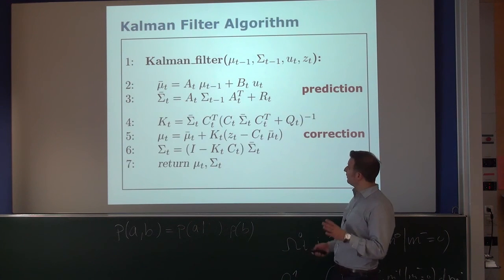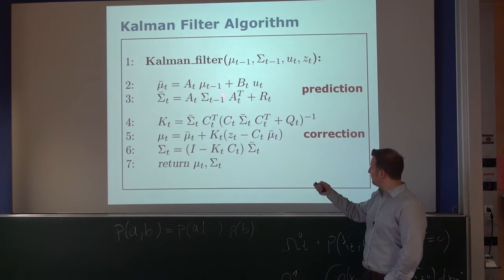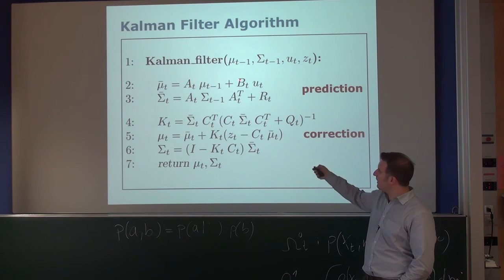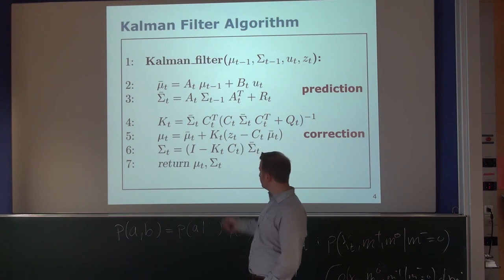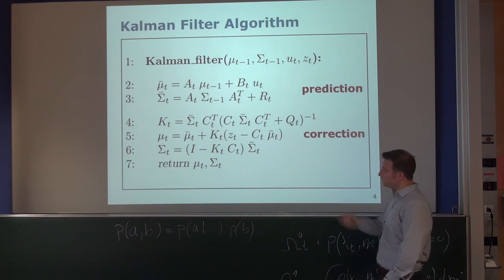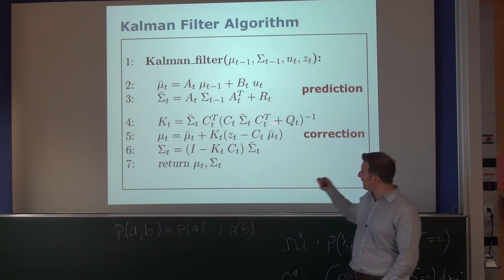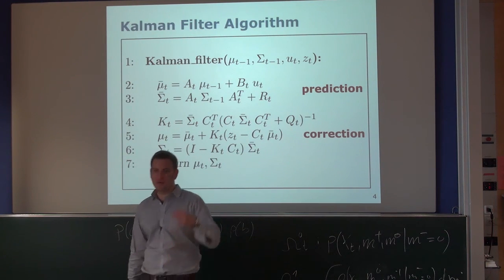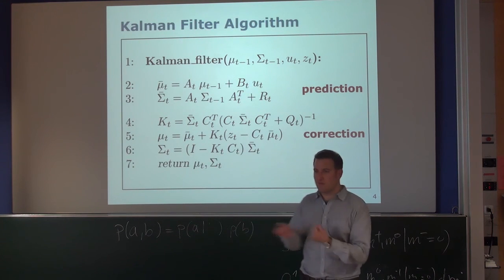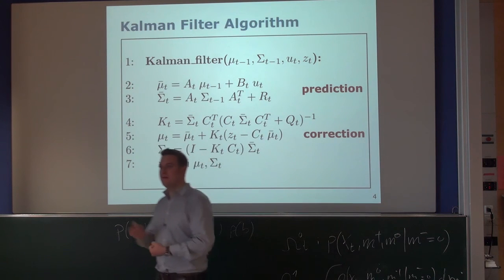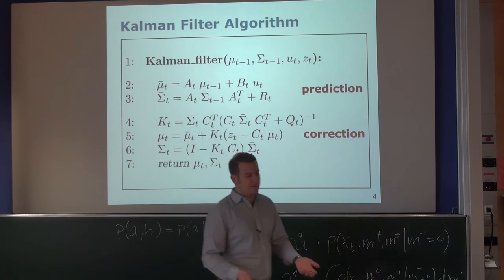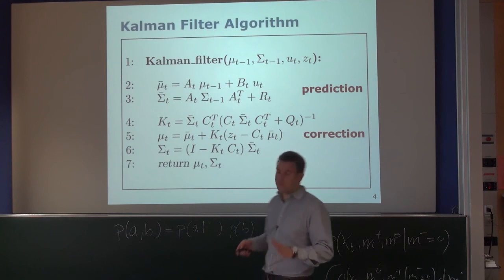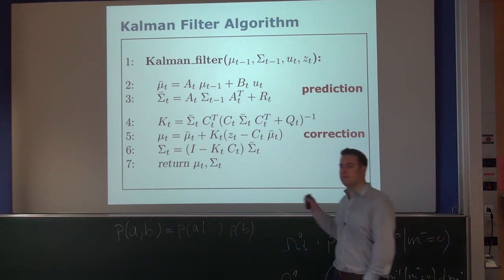The Kalman filter consists of two steps: the prediction step and the correction step. This is a simple setup where we have a linear dependency to go from the previous mean to the predicted mean, and then update our predicted covariance matrix. We compute the Kalman gain, which is a trade-off between how certain we are about the predicted estimate of the robot pose and how certain we are about the measurement — it's a weighted mean between the observation and the prediction. This leads to the correction step, which uses the observation to correct the prediction.